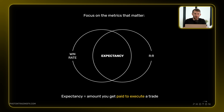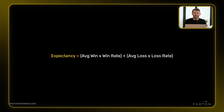Expectancy is the amount that you get paid to execute a trade in the long run. To calculate this, you take your average winners multiplied by your win rate, and then your average loss times your loss rate. So how big are your winners times how often you win, and how big are your losers times how often you lose.